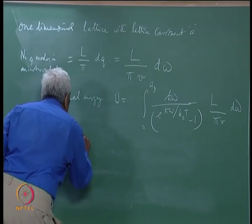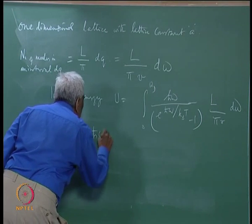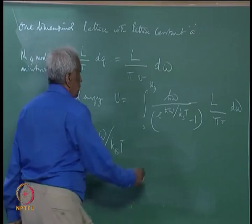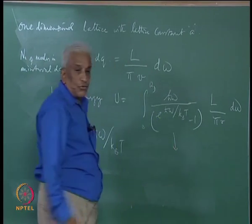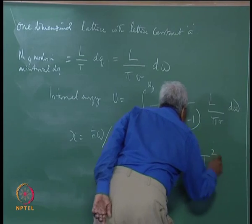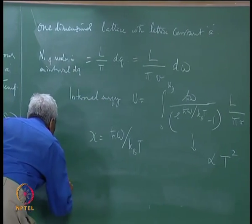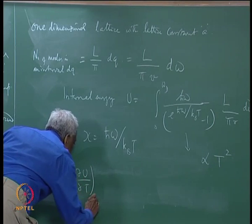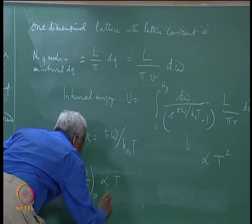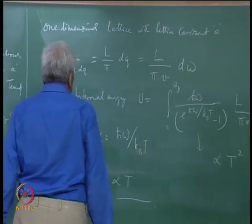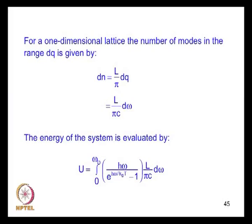We make a change of variable by taking x = ℏω/k_BT, so the integral becomes proportional to T^2. Therefore, the specific heat, which is dU/dT at constant V, is proportional to T. So the specific heat of such a one-dimensional system is a linear function of temperature.